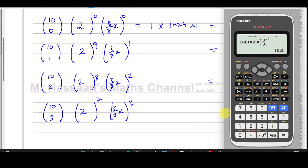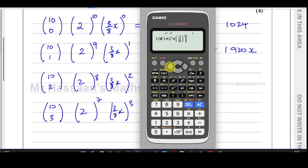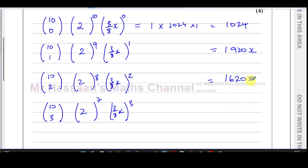For this, you could just go back to your calculator and simply change the value. This is going to be to the power of 2 now. This is going to be to the power of 8. And this is now going to be 10C2. Now that's going to be the x squared term because that x is going to be squared. That's going to give you 1620 x squared.